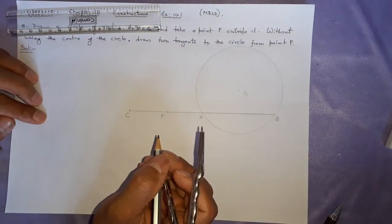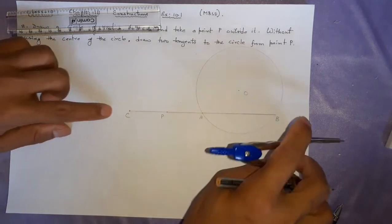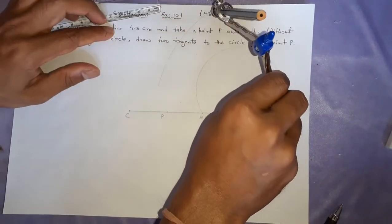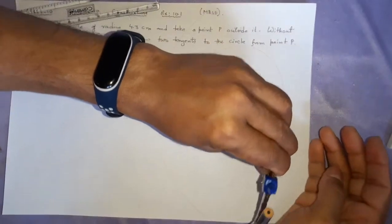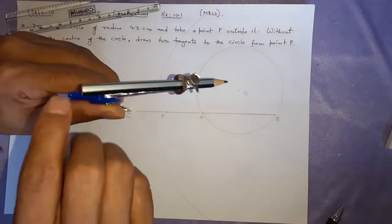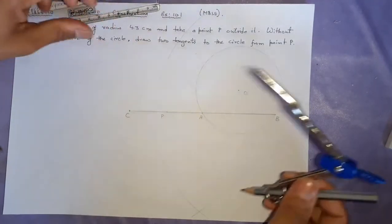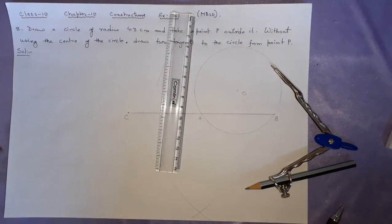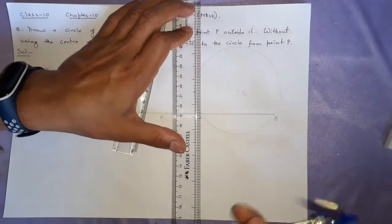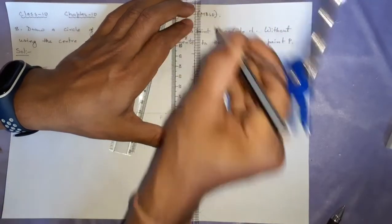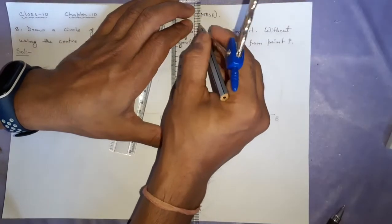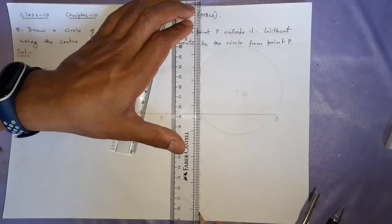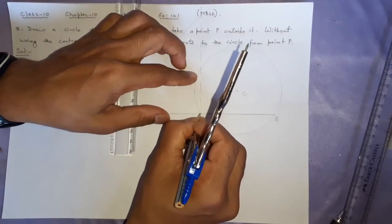Now next step is AP equal to PC we have done, perpendicular bisector of this whole BC. It is quite big here. From here I will take it more than half. Let it go there no problem. Let us join these two points. I have got a scale which is longer than this. I am going to join these two points.